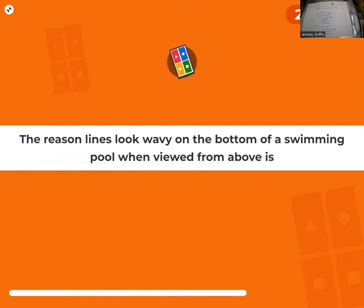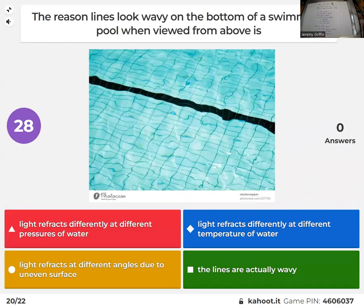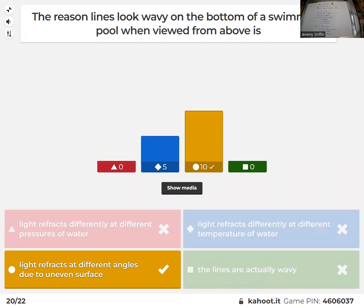The reason that lines look wavy at the bottom of the swimming pool. Yeah, refraction, different angles, uneven surface. Let's see. Maybe it's a tiny effect but it's not the main effect, right? So if you have like a smooth surface, they might have temperatures that are different, slightly different levels, but that's not the main effect. So yeah, the fact that the surface itself is uneven, you'll get different refraction angles.